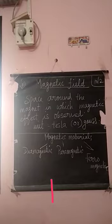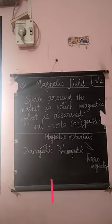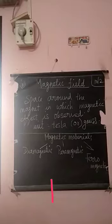First one is diamagnetic. These are the general characteristics of diamagnetic material. Examples for diamagnetic material are: mercury, gold, water, copper. These are all diamagnetic substances.